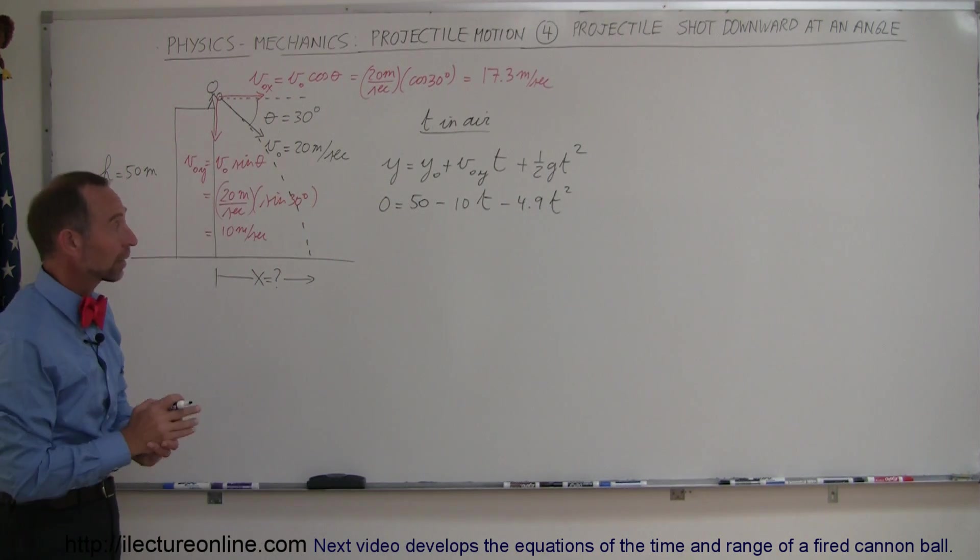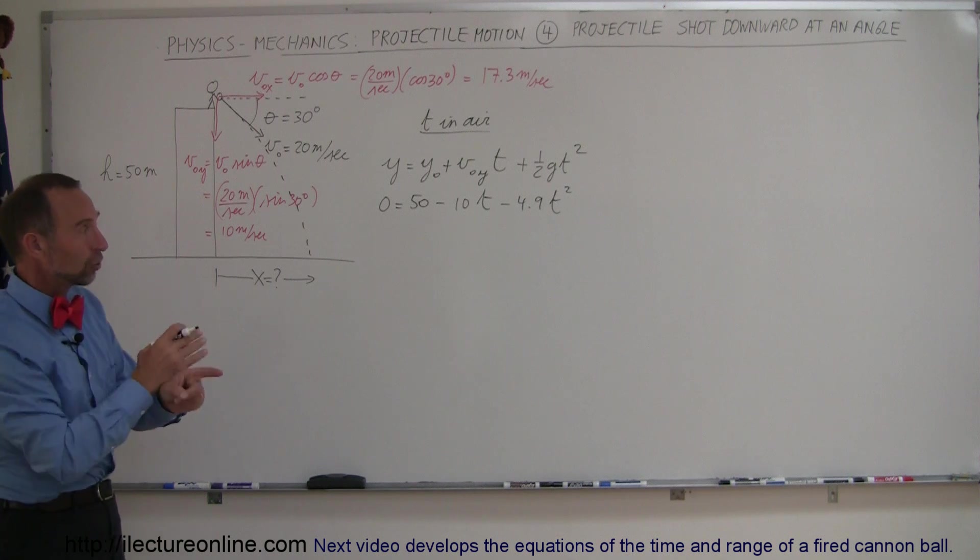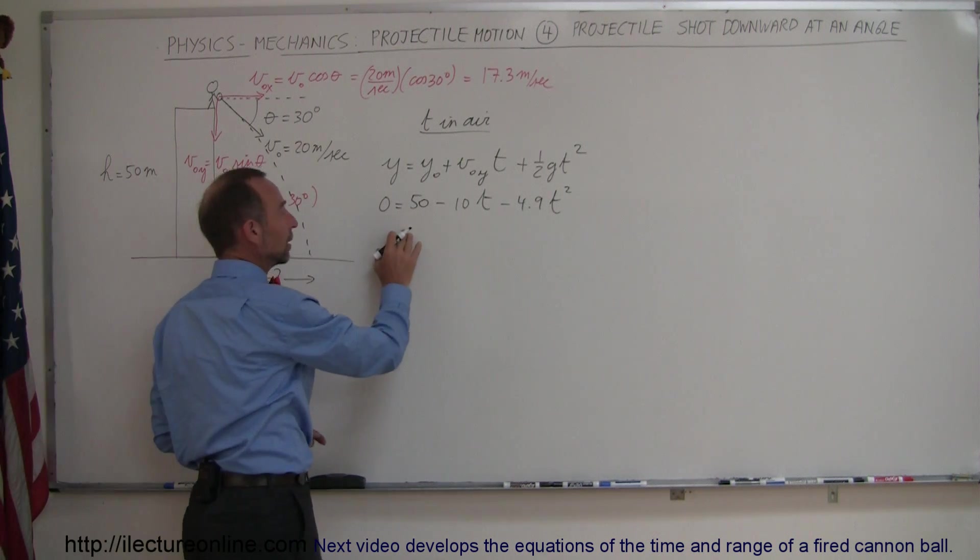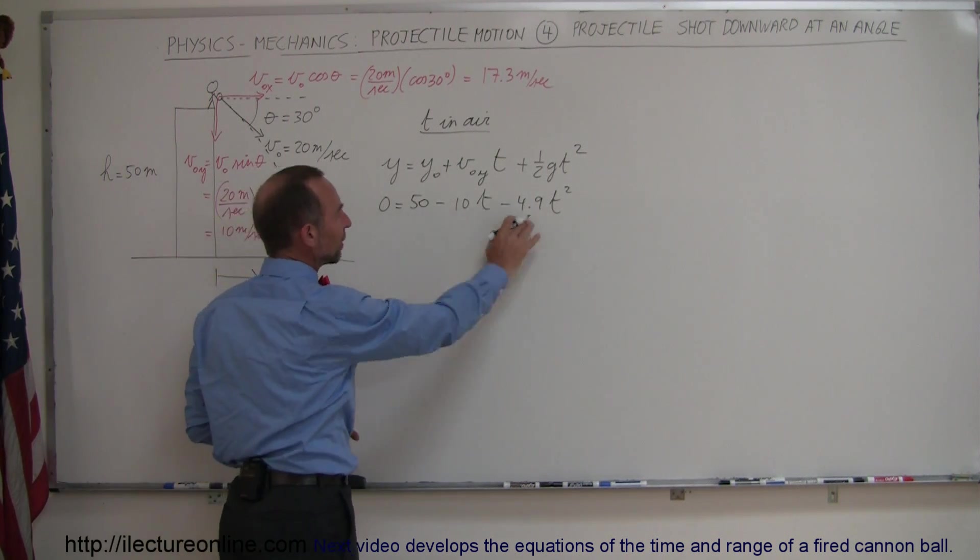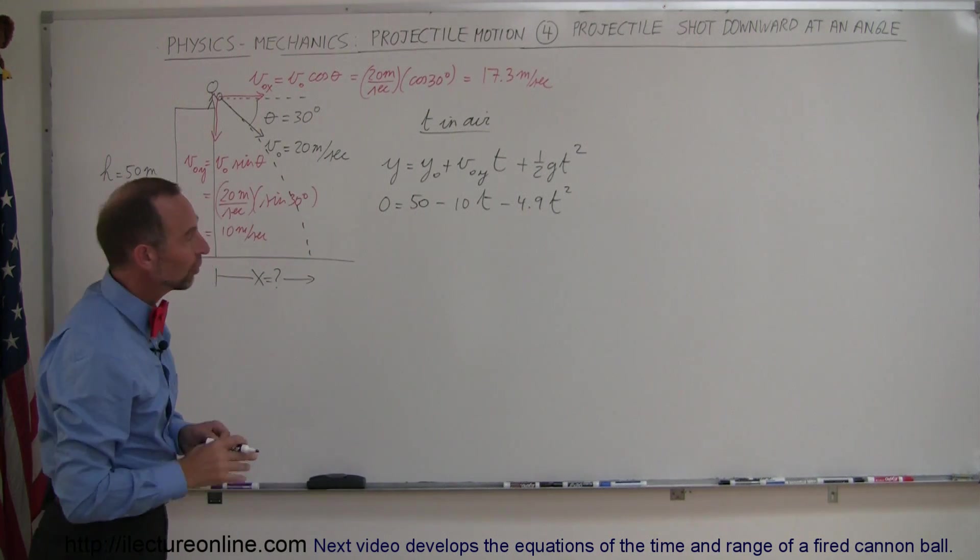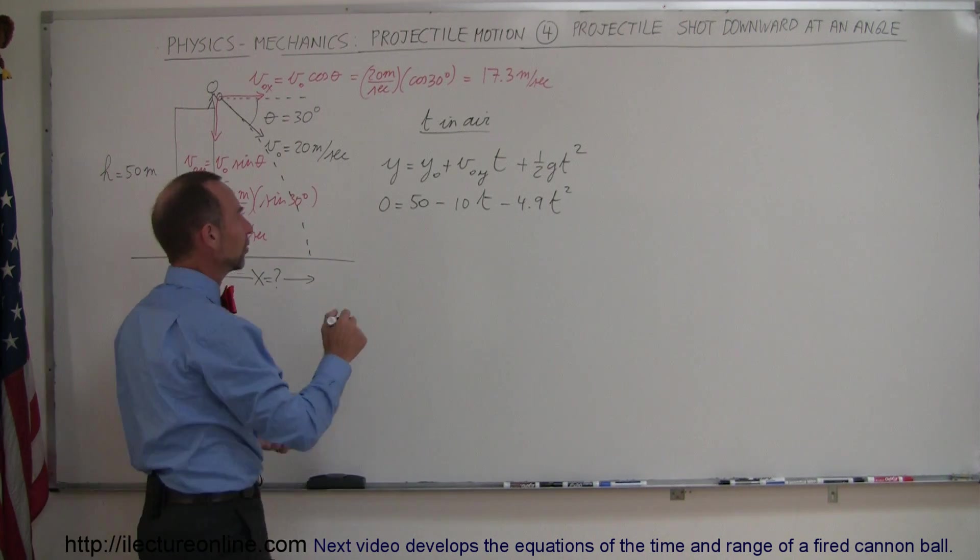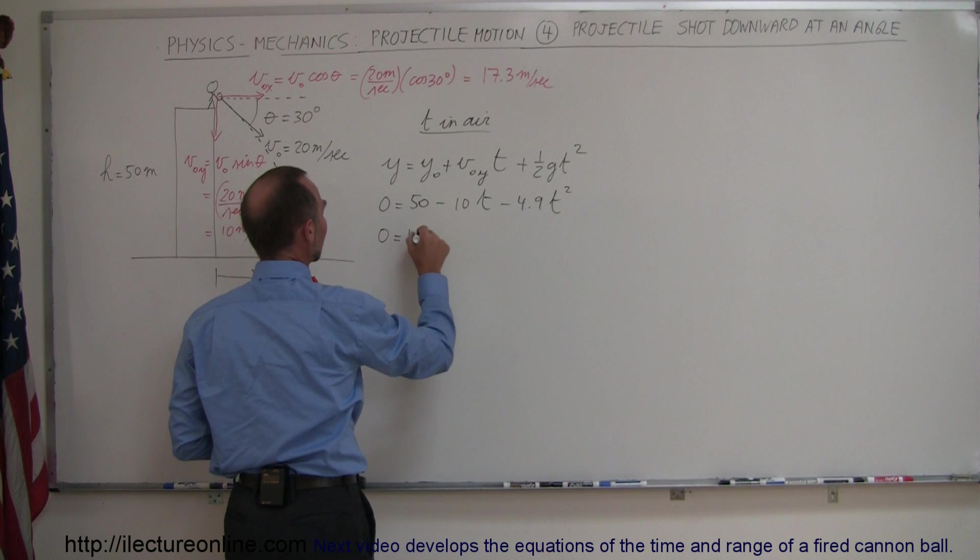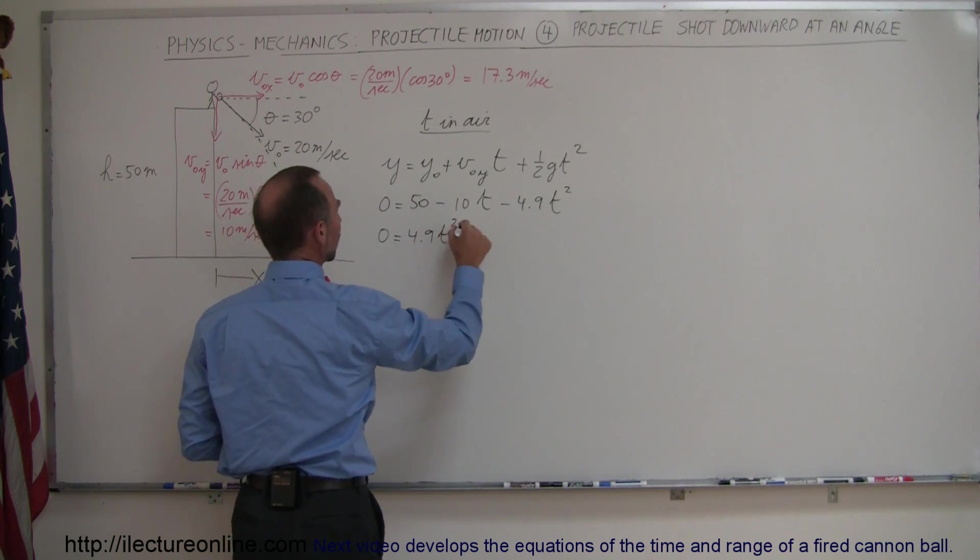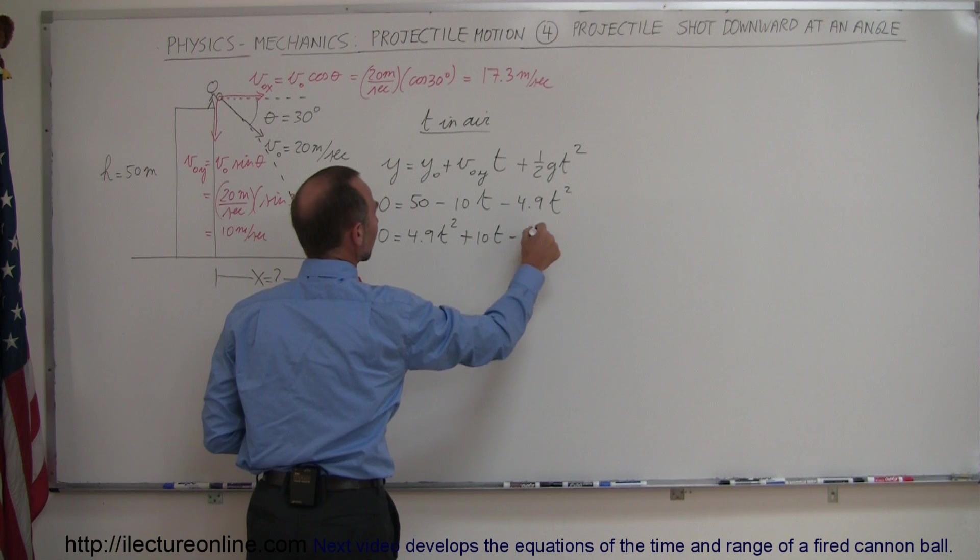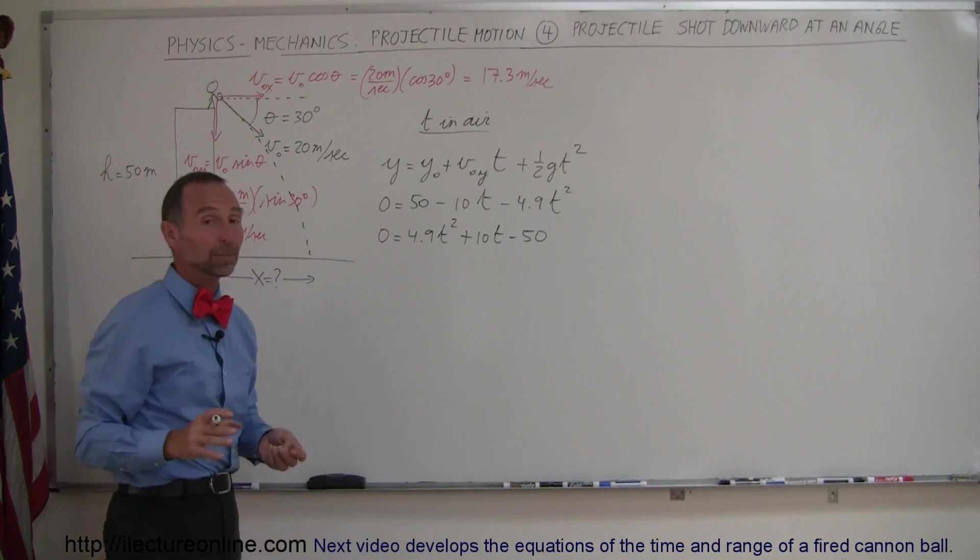All right, so again we have a quadratic equation. We want to rearrange the terms to have the t squared in the front, and we want to multiply everything by negative 1 on both sides to rearrange the sign. So we have 0 equals 4.9 t squared plus 10t minus 50.